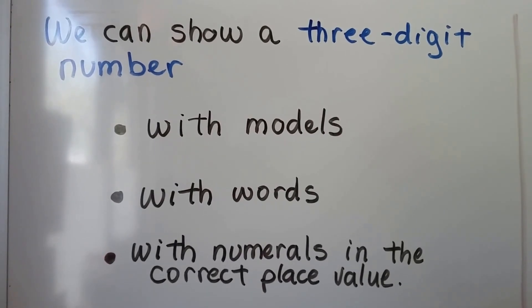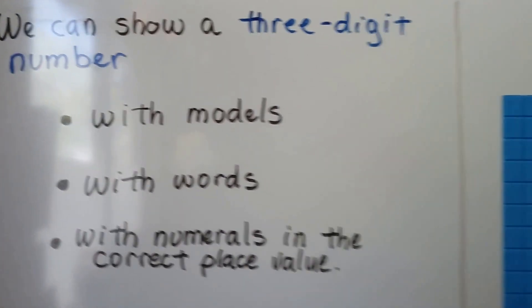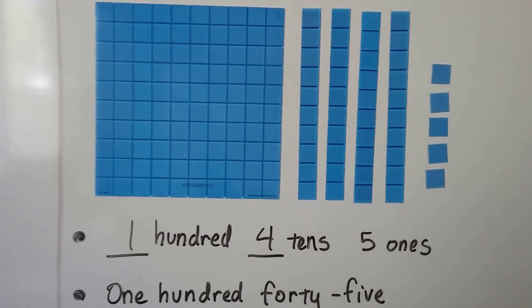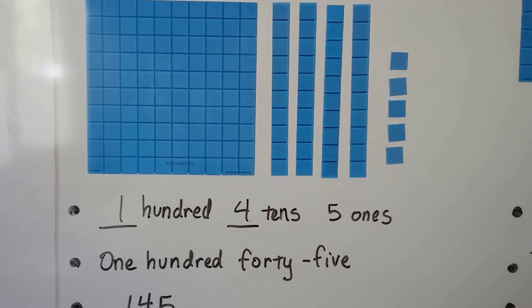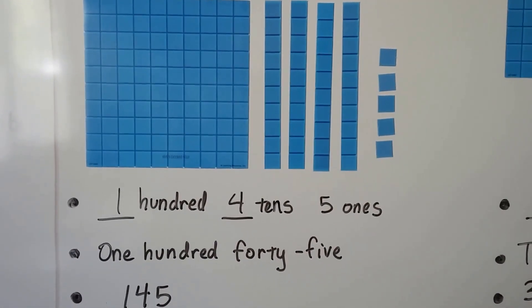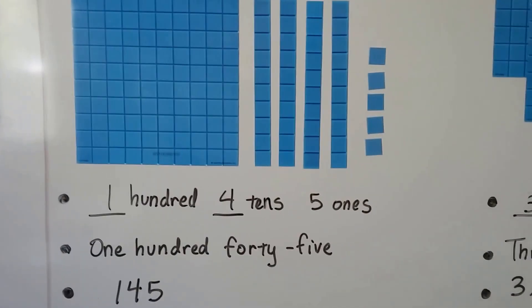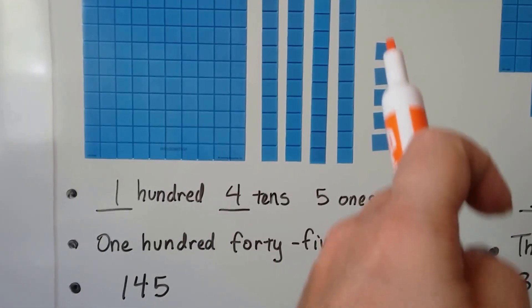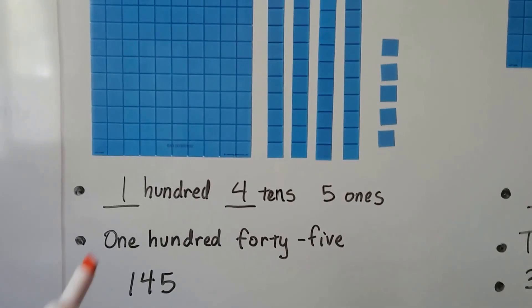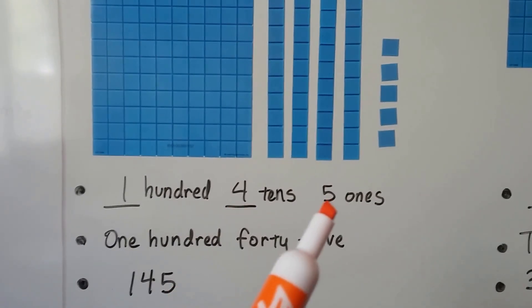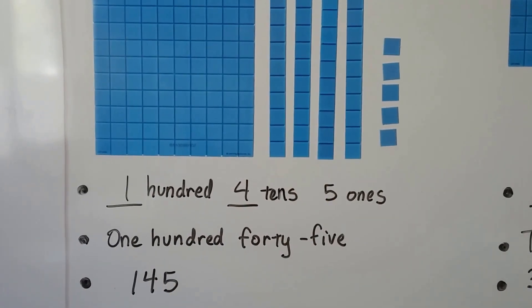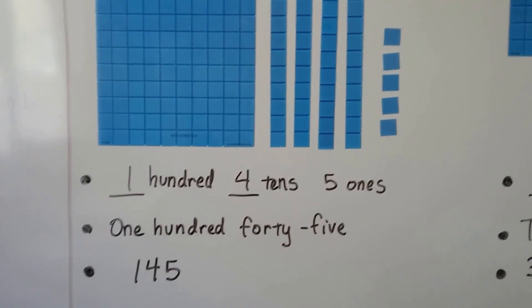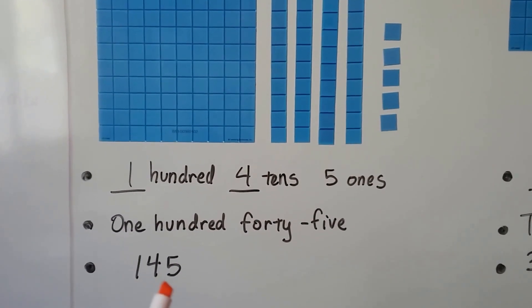In the correct place value, we have a hundreds square, we have four longs of ten, and we have five single units. We have one hundred, four tens, and five ones — that's 145.